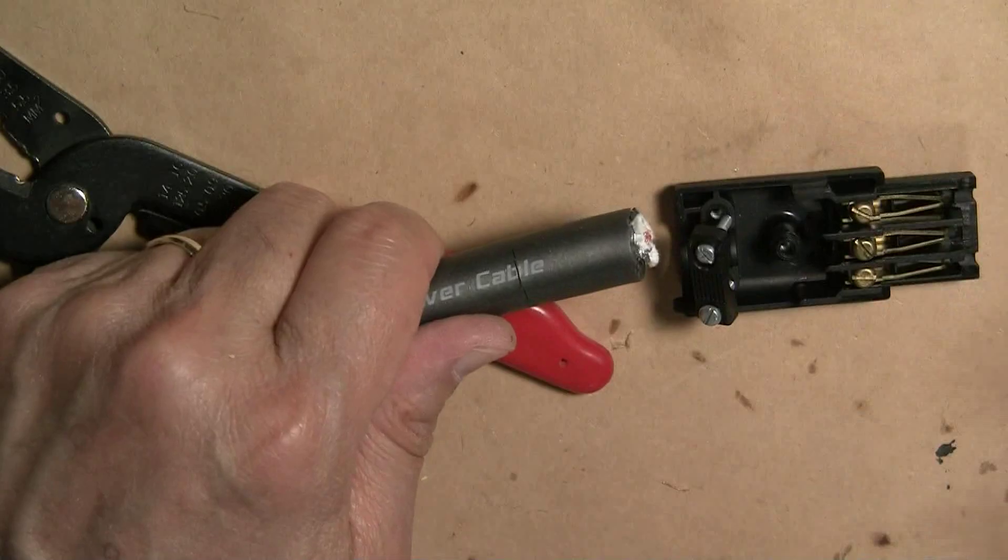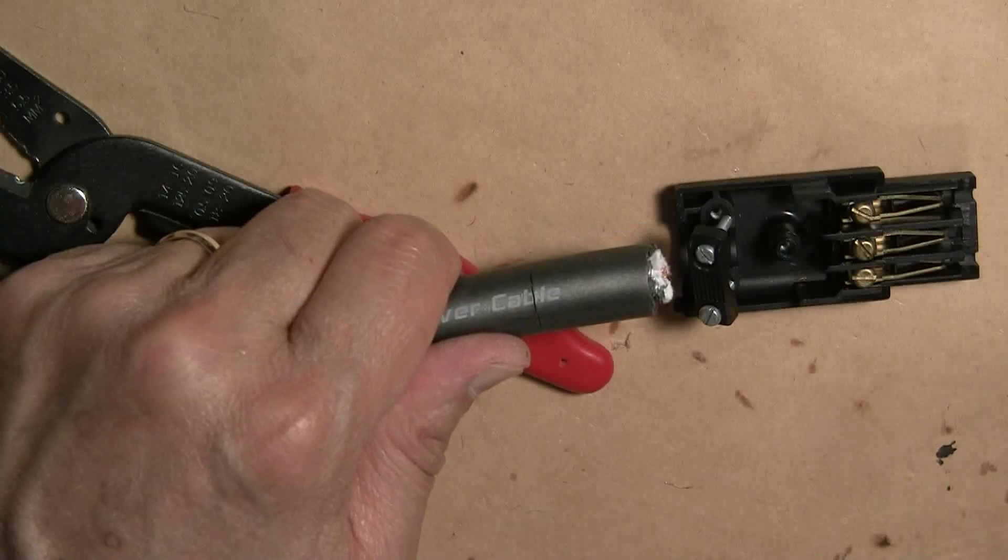For the IEC connection end, I'm going to strip about 1 inch of the outer sheath.